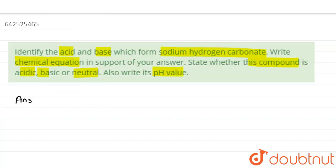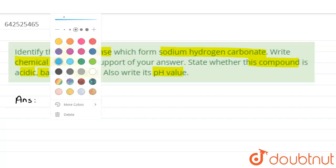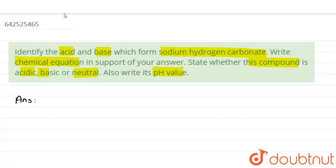So if we want to write the equation for the formation of sodium hydrogen carbonate, then the equation is as follows: carbonic acid, this is carbonic acid, when react with sodium hydroxide, sodium hydroxide...